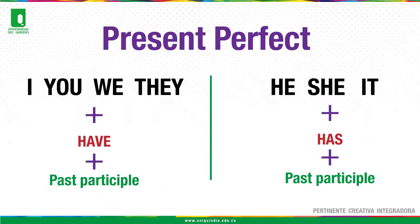Affirmative structure: Subjects I, you, we, they, plus auxiliary have, plus the past participle of the verb. For third persons — subjects he, she, it — plus auxiliary has, plus the past participle of the verb.